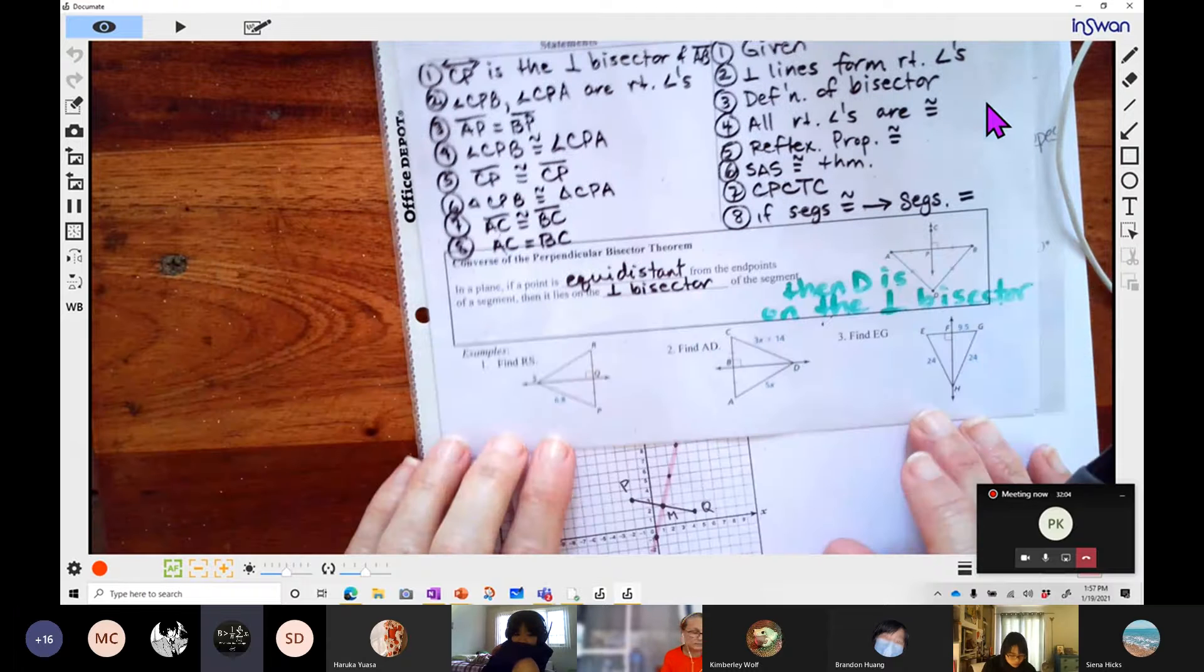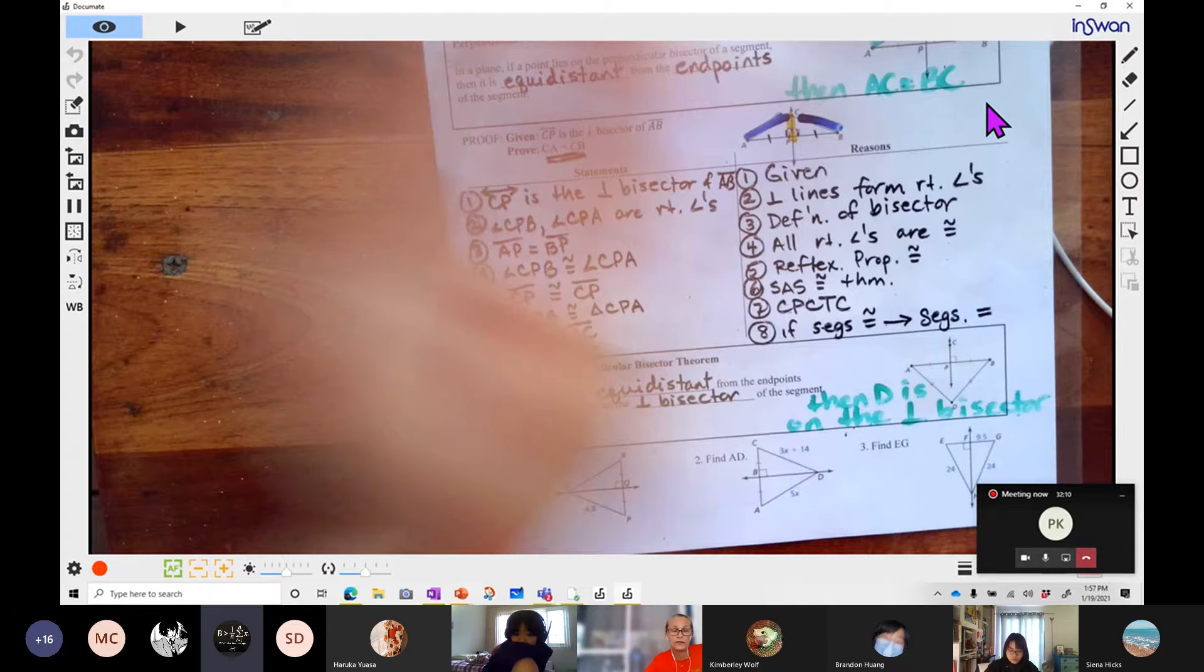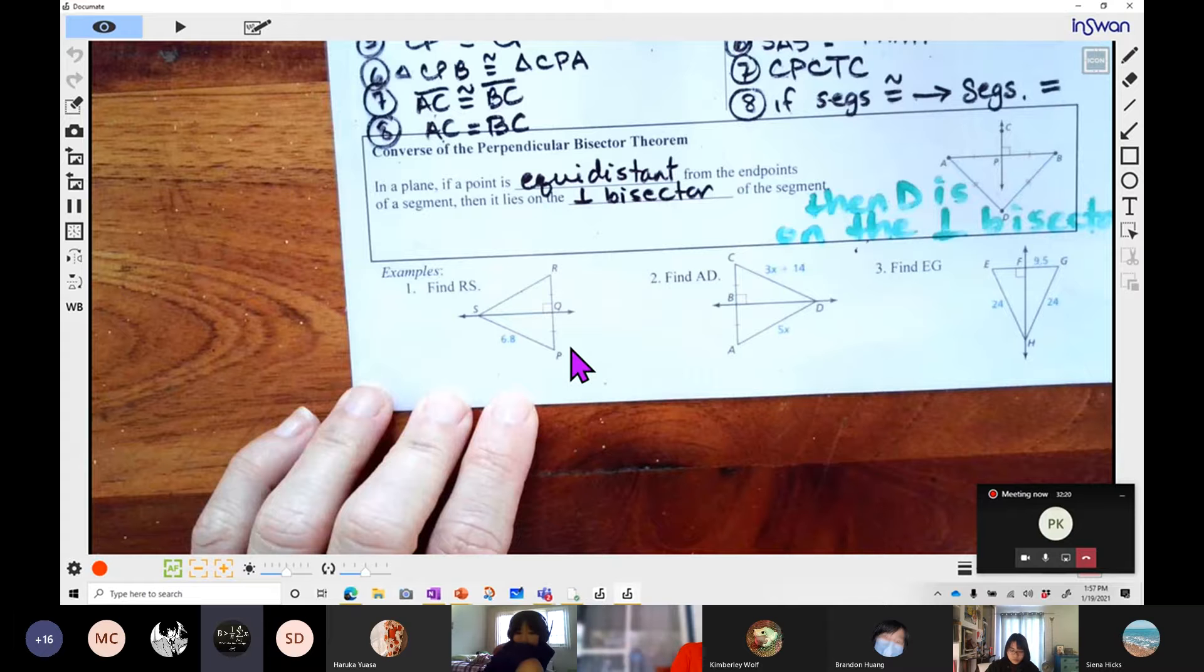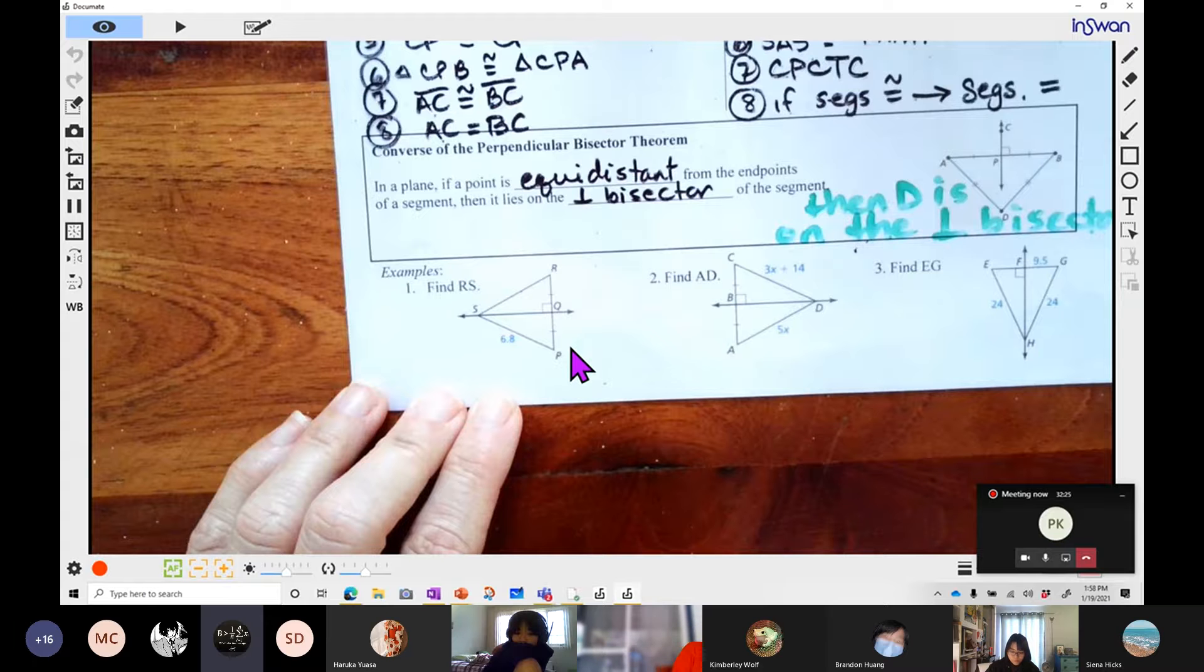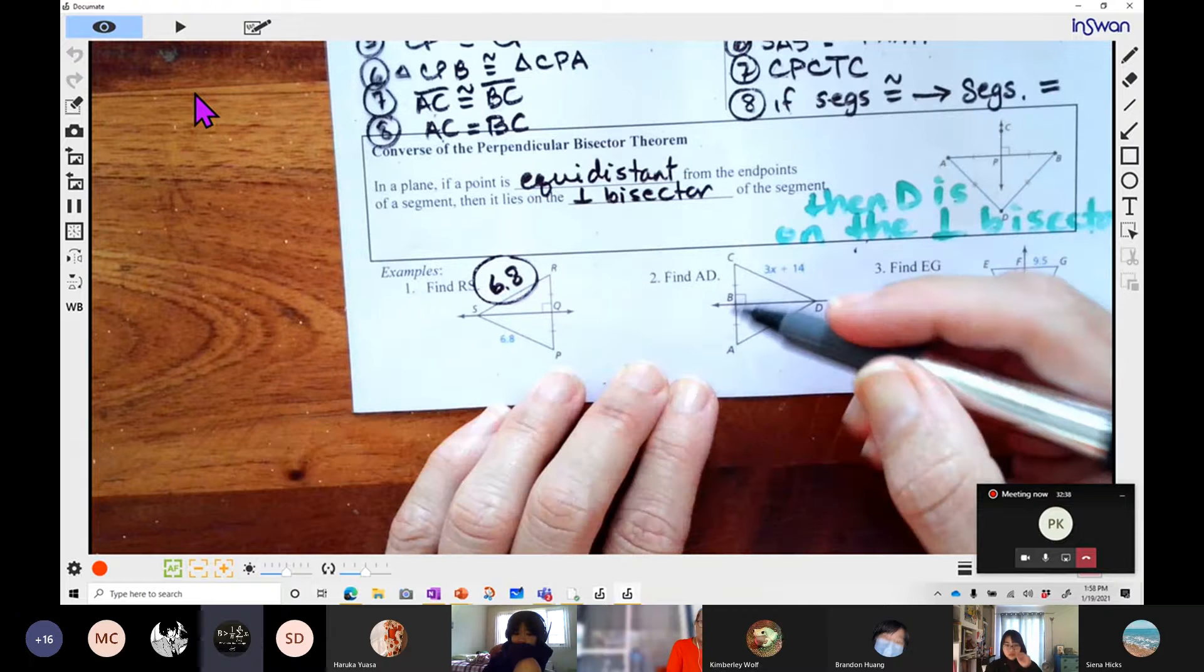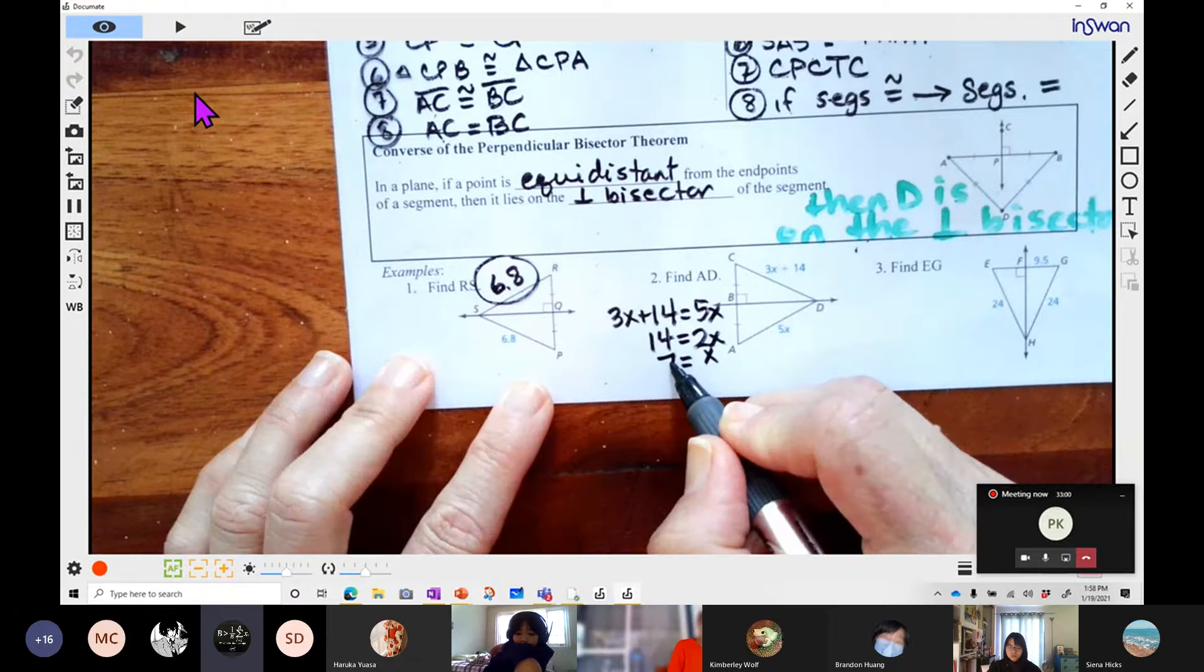We're going to do a couple of examples here. Find RS. If we know that this is the perpendicular and it's congruent by side angle side, then if this is 6.8, then this is 6.8. It's as simple as that. If we're going to look for AD, we have the same situation. Here's your bisected part. Here's your perpendicular. That means that CD is equal to AD, so we write 3X plus 14 equals 5X. I'm going to take away the 3X from both sides and then divide both sides and I get X equals 7. Now I didn't answer the question yet because it said find AD. So the answer to the question is 5 times X. AD is 35.